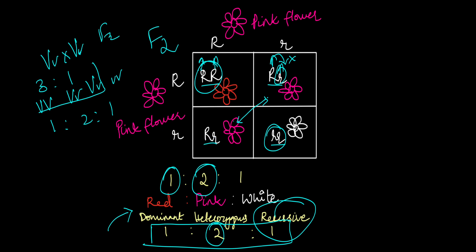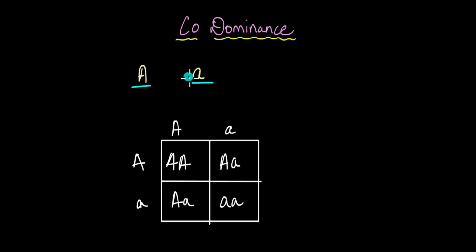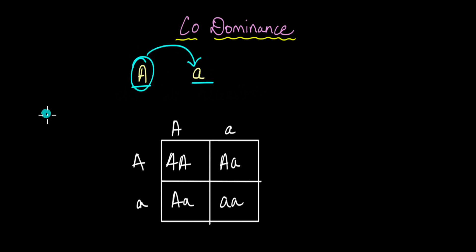Next, let's take a look at codominance. To understand codominance, let's assume there are two alleles for a gene — capital A and small a — where capital A is dominant over small a.